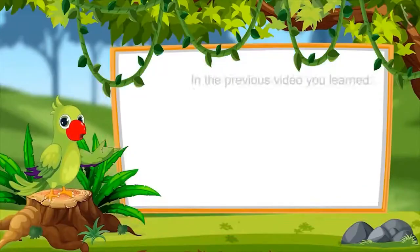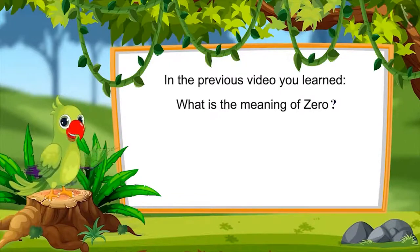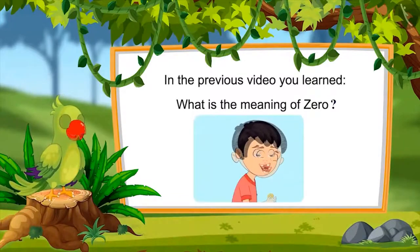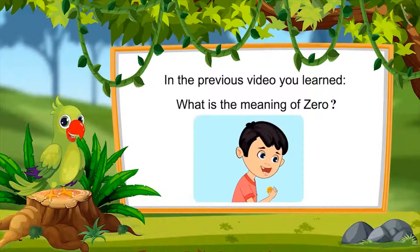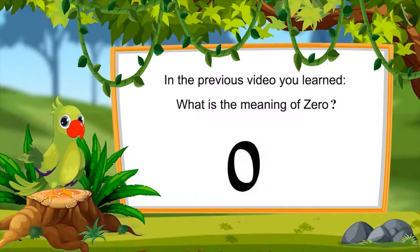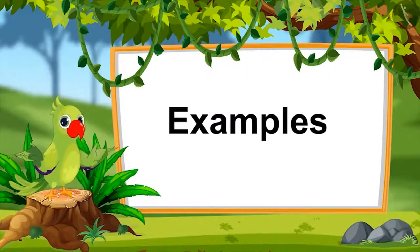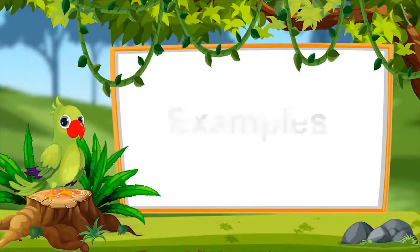So children, in the last video, you learned what is the meaning of zero, and when there is not a single object left, it is called zero. Children, in this video, we will see some examples of zero, in which we will develop an understanding of objects decreasing one by one.